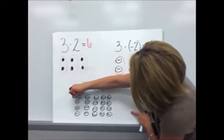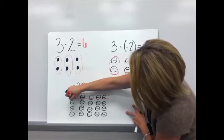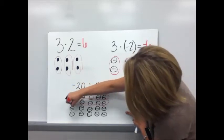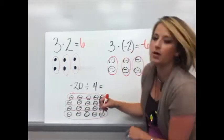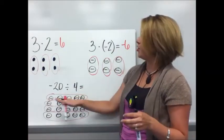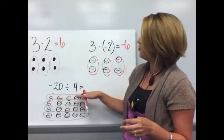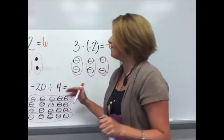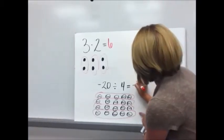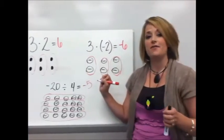So four groups, one, two, three, four. In those four groups there are one, two, three, four, five negative counters. Therefore negative 20 divided by positive four is negative five.